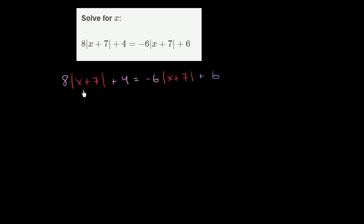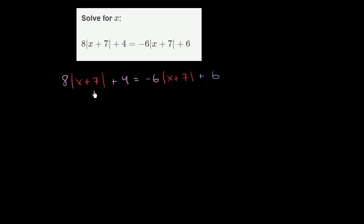Now the key here — at first it looks kind of daunting, it's this complex equation with absolute values. But the way to think about this is if you could solve for the absolute value expression, it then turns into a much simpler problem. You can almost treat the absolute value of x plus 7 as a variable. And then once you solve for that, it becomes a simpler absolute value problem. So let's try to do that.